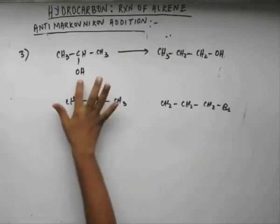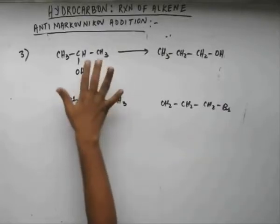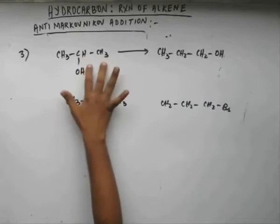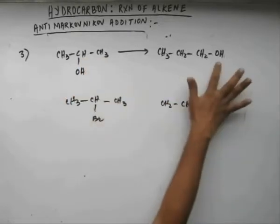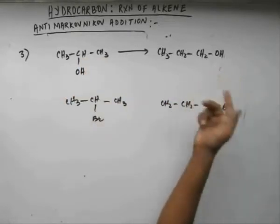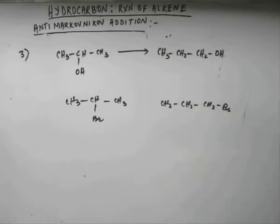Similarly, from this alcohol if you can get an alkene, and from that alkene you can get bromine on the first position, then that bromine can be substituted by a hydroxide group very easily by a simple SN2 mechanism.